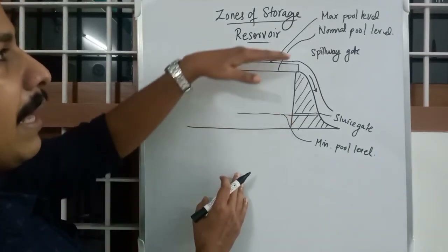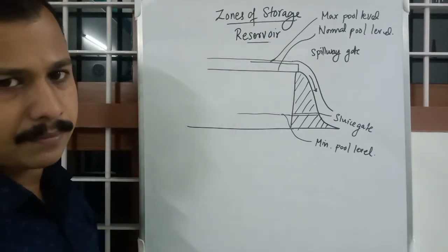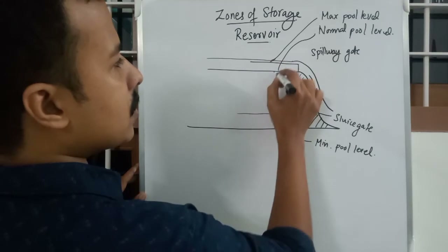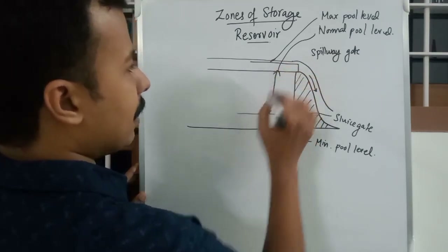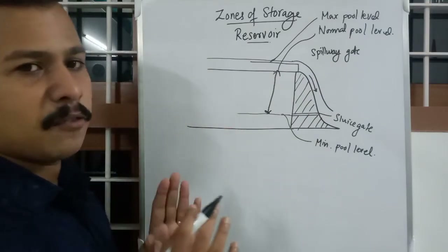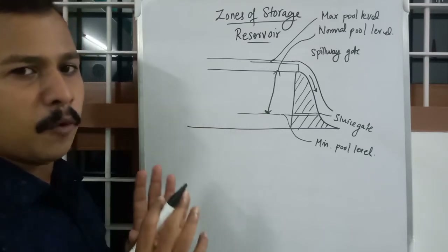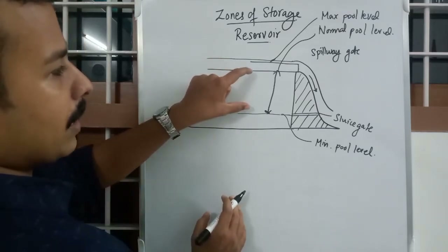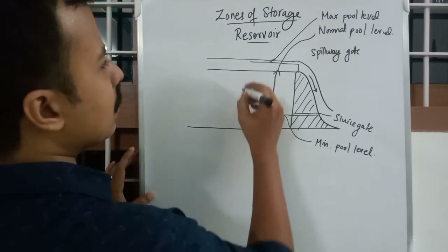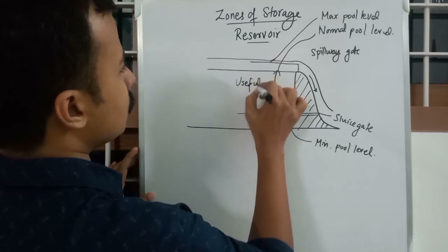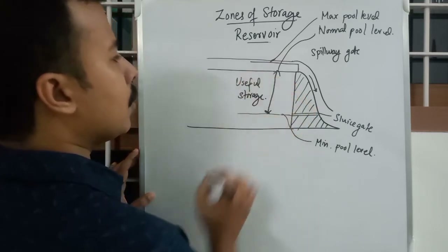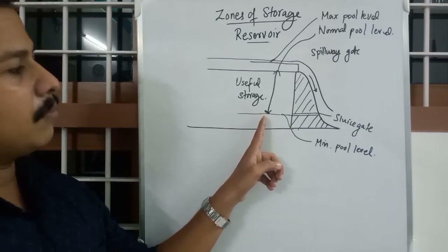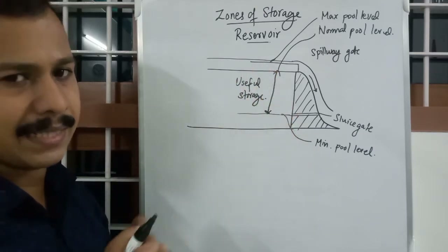The water level will always remain between Minimum Pool Level and Maximum Pool Level throughout the year or the lifetime of the reservoir. The water stored between Normal Pool Level and Minimum Pool Level is the amount of water used for our purpose — whether hydraulic or irrigation. This zone is known as Useful Storage, which spans from Minimum Pool Level to Normal Pool Level.